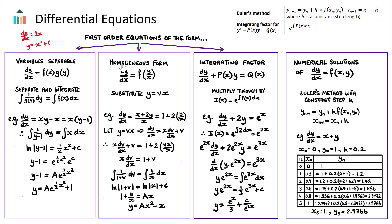The second form we might see is the homogeneous form, where somewhere in our differential equation we have y over x, and we need to use a different technique. For example, if we have dy/dx equal to (x + 2y) over x, we can split this into two fractions: x over x plus 2y over x, which becomes 1 plus 2 times (y/x). Notice that our differential equation is now in this form with just a constant and a y/x term.